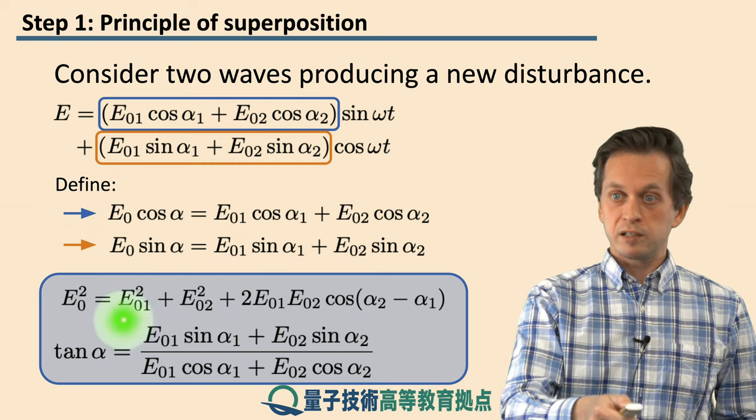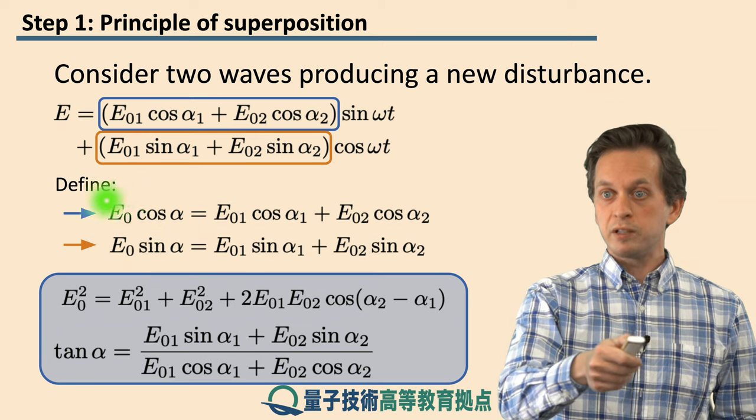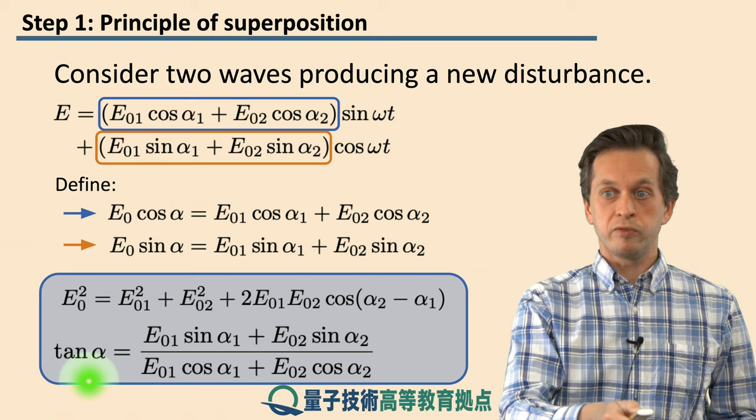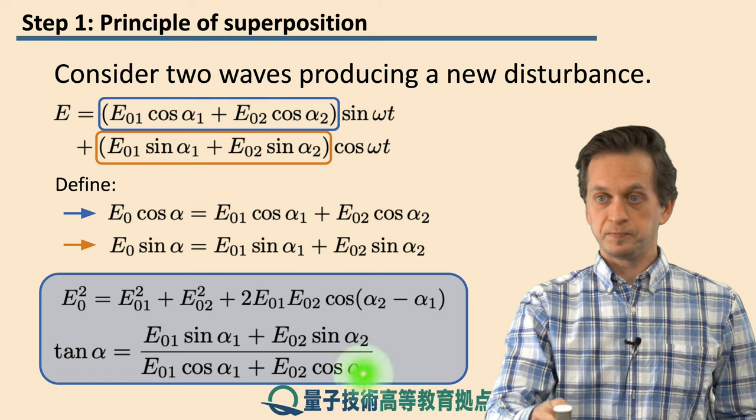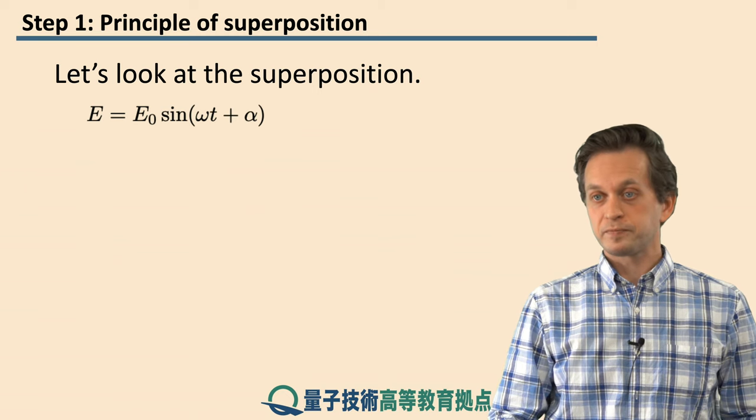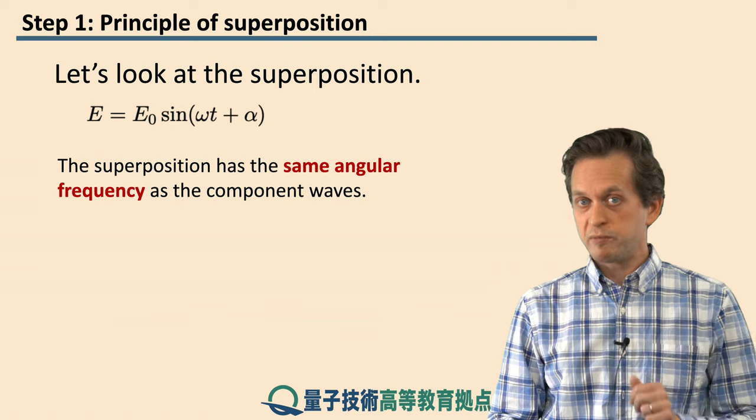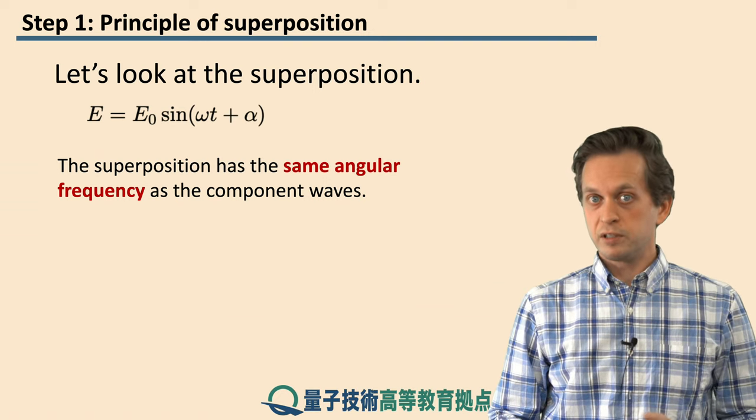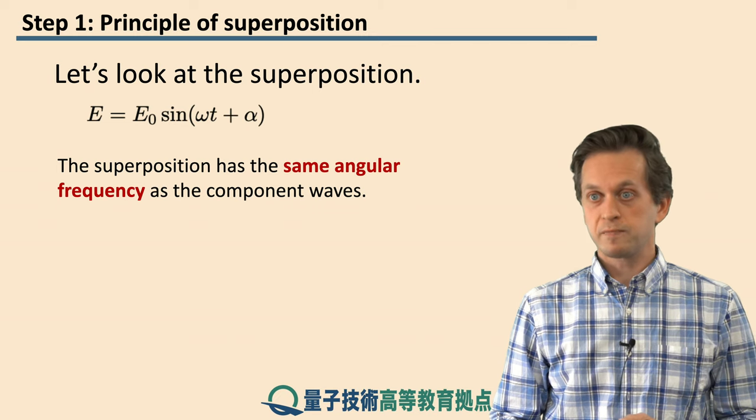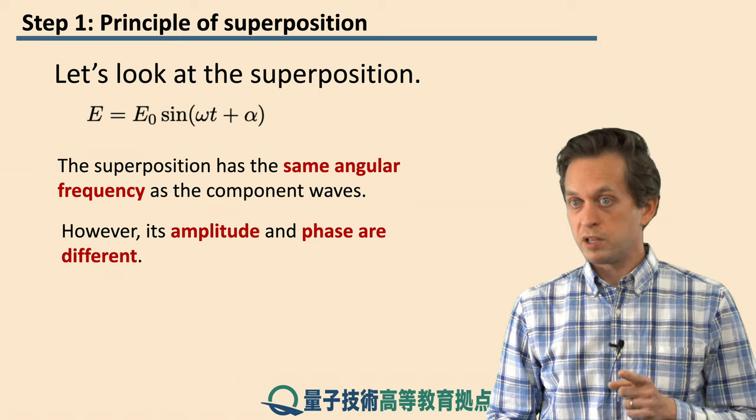Also, if we take this orange expression, the second expression over here, and we divide by this blue expression over here, we can get an expression for tangent of α given as this following ratio. And this is our new wave. So we started with two waves with same frequencies, which means that the resultant disturbance also travels at the same frequency, which makes sense. But this new wave has different amplitude and also different phase.